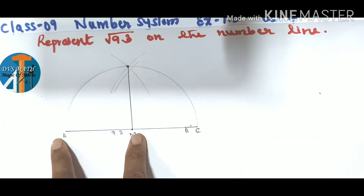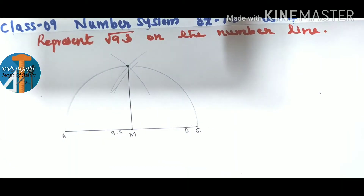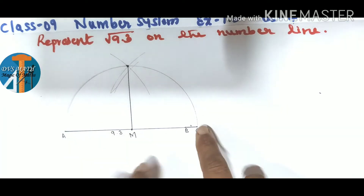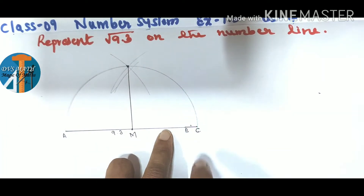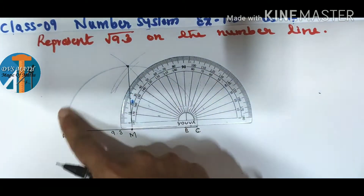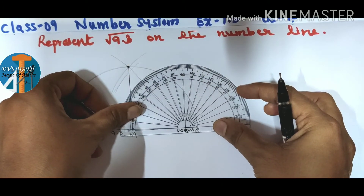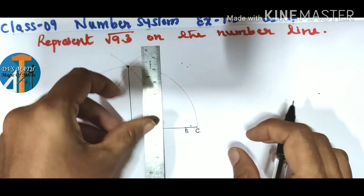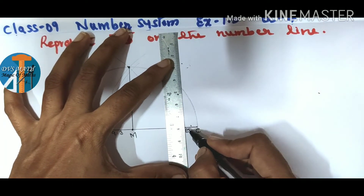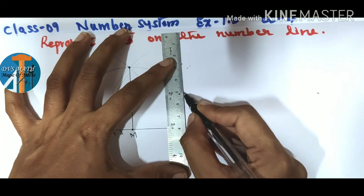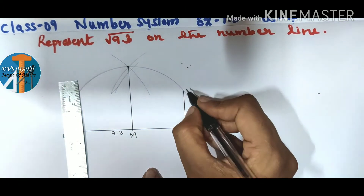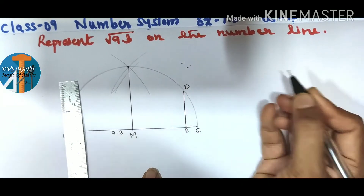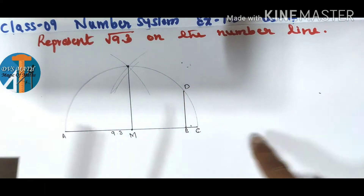Now from point B, draw a perpendicular line at 90 degrees. Using a compass or protractor, mark 90 degrees from B. Draw this perpendicular line so that it touches the semicircle — not all the way to the top, just where it meets the semicircle. Mark this point as D.